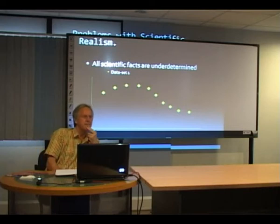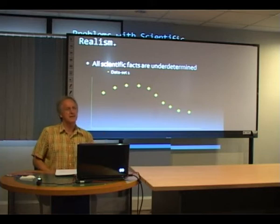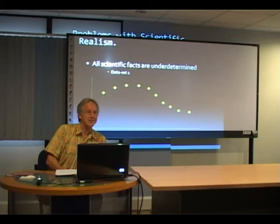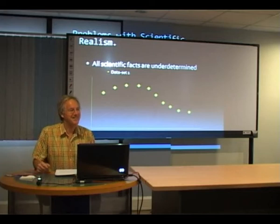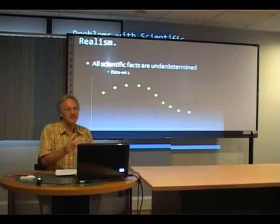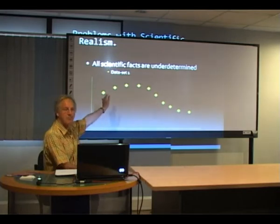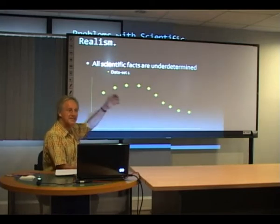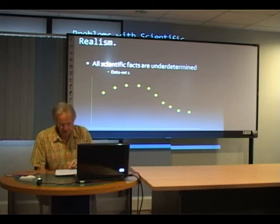To counter that, the scientific realists point out that the problem they face in botany and in chemistry and so forth is usually not the existence of multiple theories all of which explain the data. The problem is usually the non-existence of any theory that explains the data. Coming up with even one theory to explain the data is hard enough. And whilst my theoretical example of multiple theories to explain the data set is true in a logical sense, when it comes to real data sets it's much more difficult to make that claim.